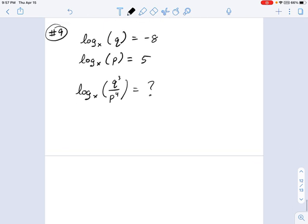Here's the last example. And this is something a little weird. Sometimes you get an example where it says log base x of q equals negative 8, log base x of p equals 5. What's log base x of q cubed divided by p to the 4th? And this is a common ACT question. What it's really just asking you in a weird way is, do you know what the power quotient and product rules are?